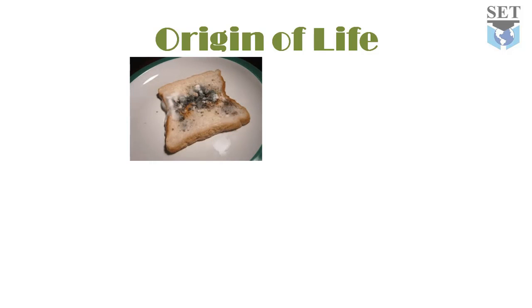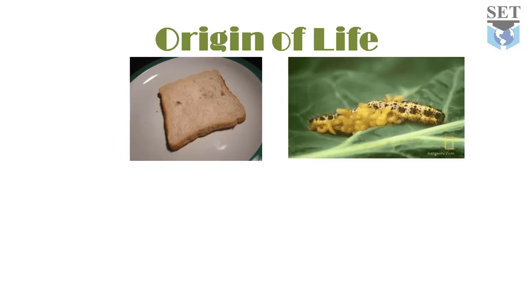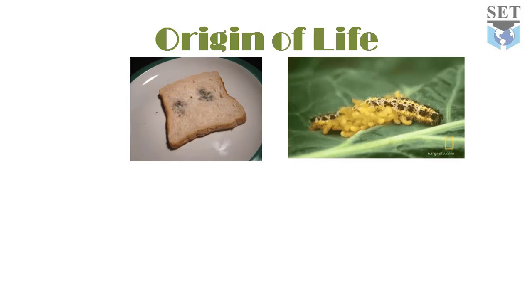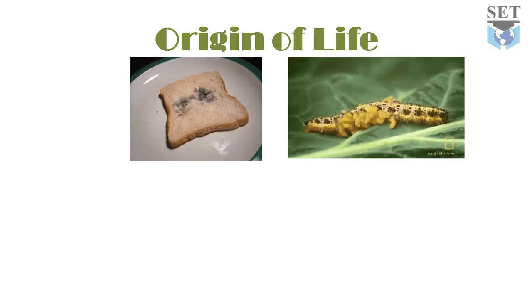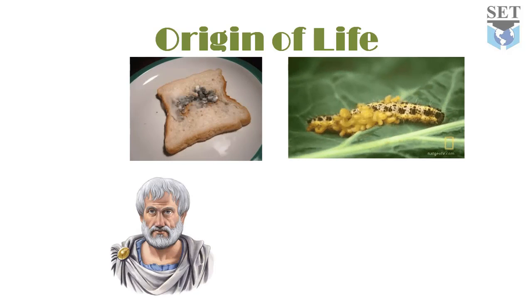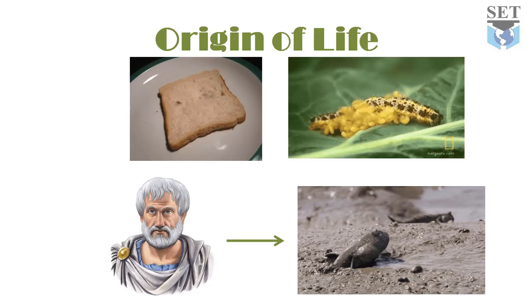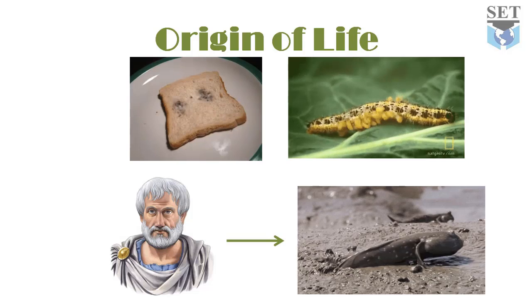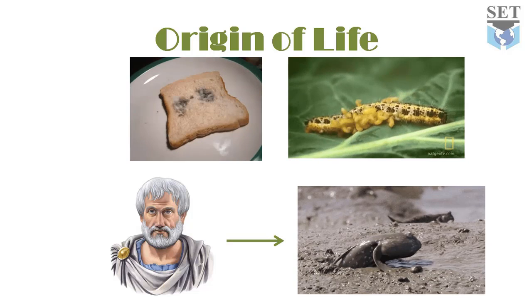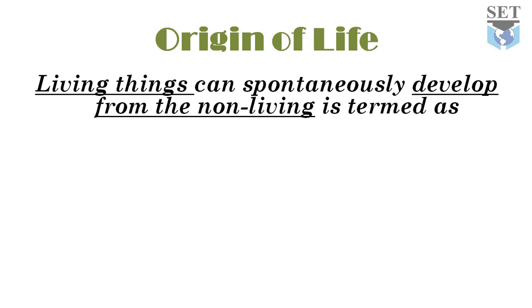They also observed that maggots appear on the dead bodies of animals or insects after some days. The famous philosopher Aristotle believed that fishes, frogs, and aquatic insects spontaneously develop from mud. This old belief — that living things can spontaneously develop from non-living things — is termed abiogenesis.